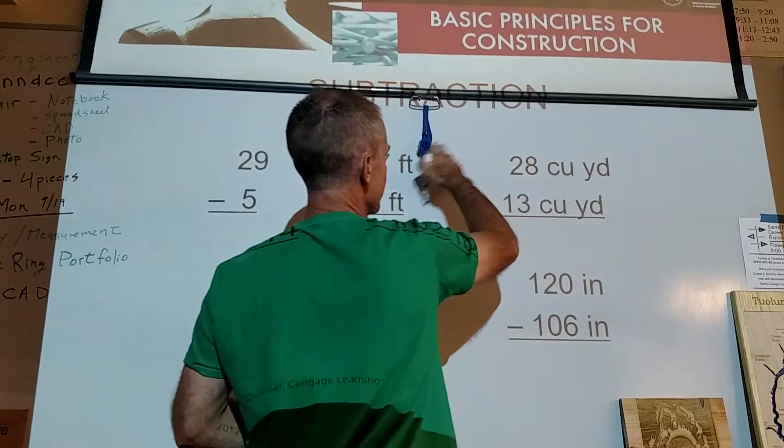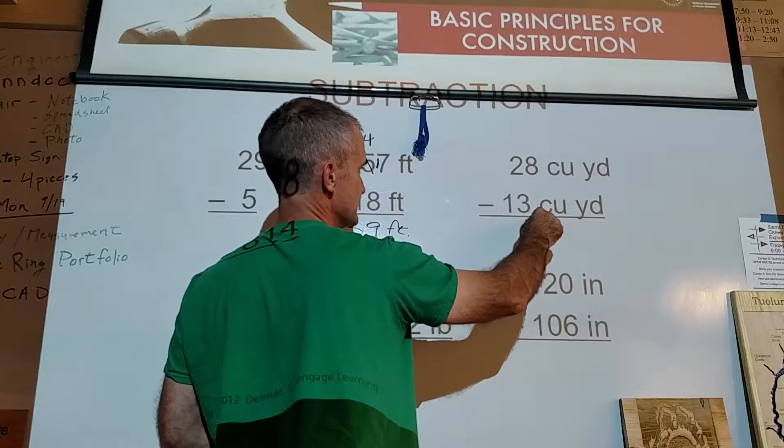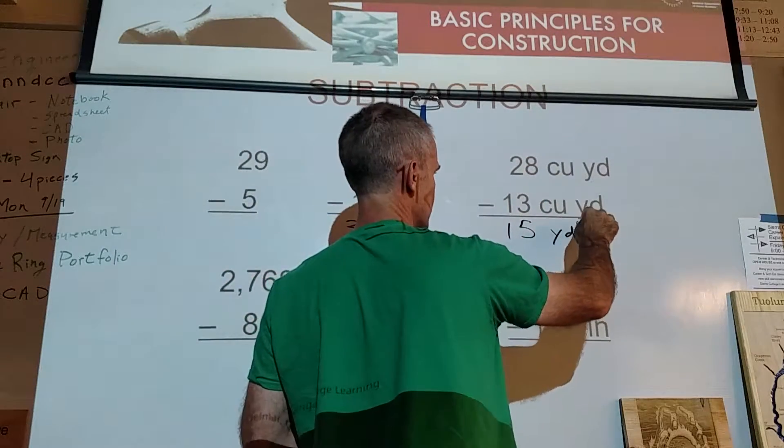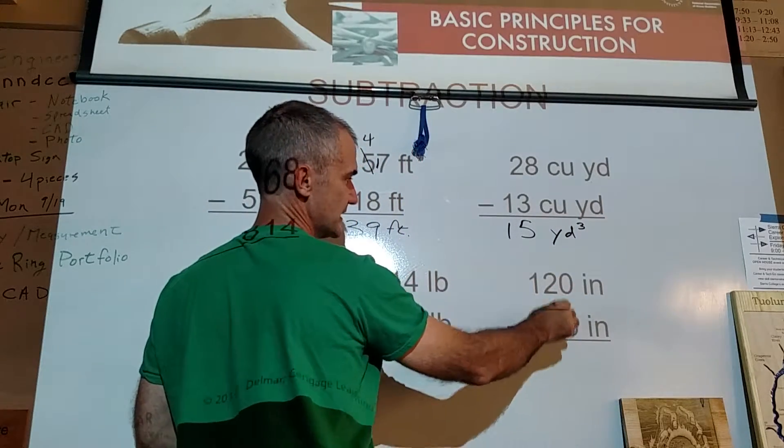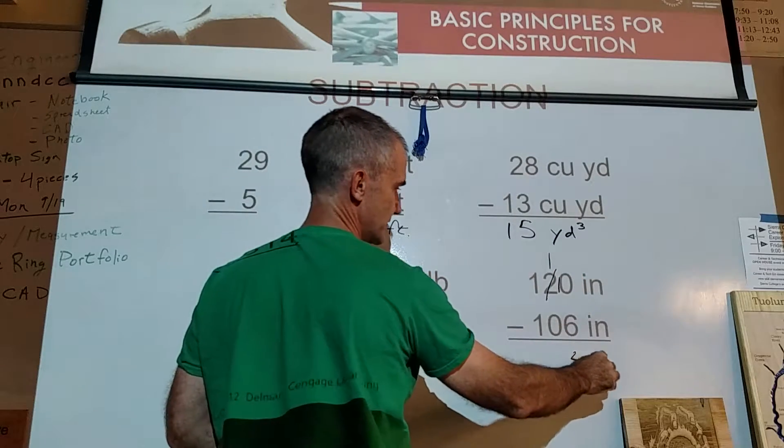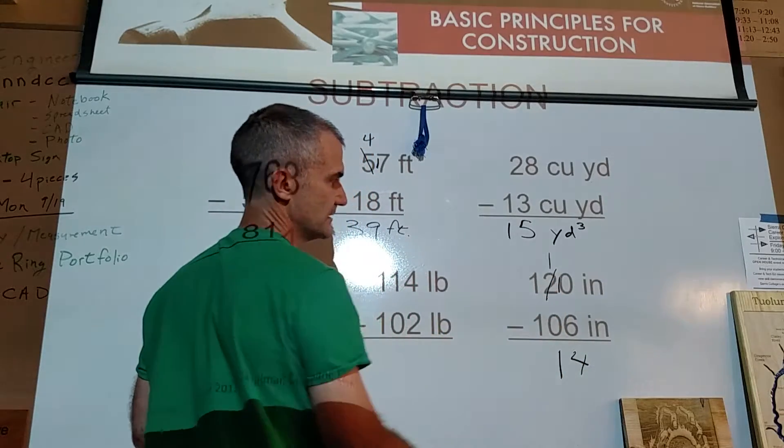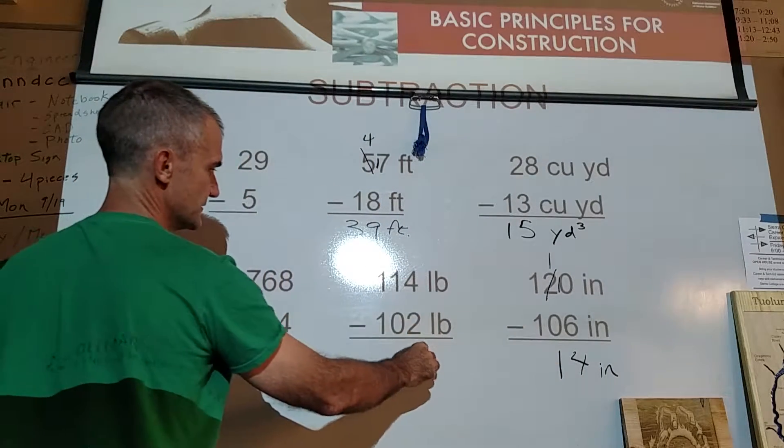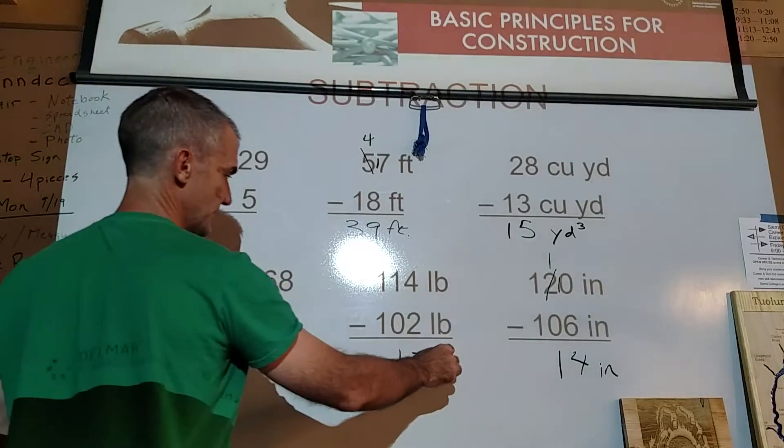Over here, I have 28 minus 13. 8 minus 3. This is larger, easy enough. 5, 2 minus 1, 15. And that's cubic yards. 0 minus 6. I can't do that. I have to borrow 10 from here. So I have 10 minus 6, which is 4. Right here, I have 1 minus 0, 1. 1 minus 1, 0. So I have 14 inches. 4 minus 2 is 2. 1 minus 0 is 1. 1 minus 1 is 0. And this is pounds.